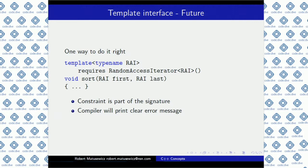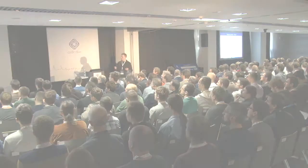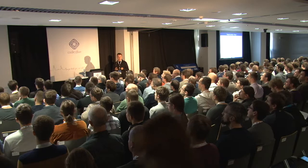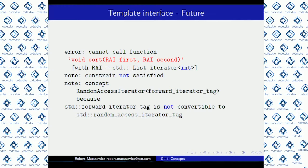With concepts, we will have the ability to state that a given type in a particular function needs to fulfill something we are calling concepts — I will explain what a concept is in the second part of the presentation. For now, you need to know that the compiler will generate code for this templated function when the random access iterator concept returns true; otherwise it will print a clear error stating that the sort function cannot be used because the random access iterator concept isn't fulfilled, and it also states why this concept isn't fulfilled.